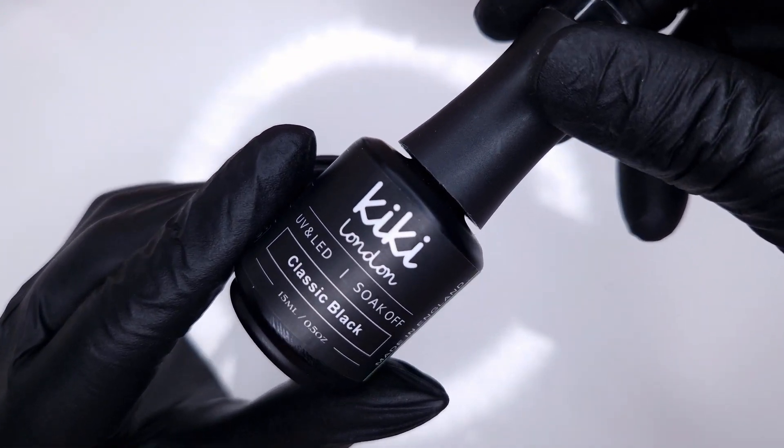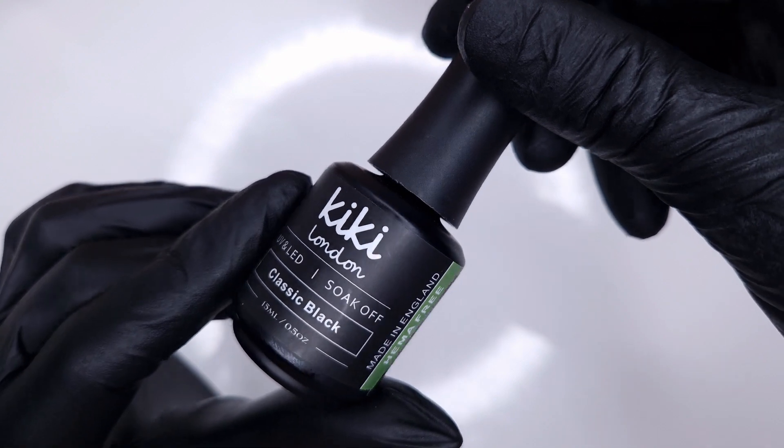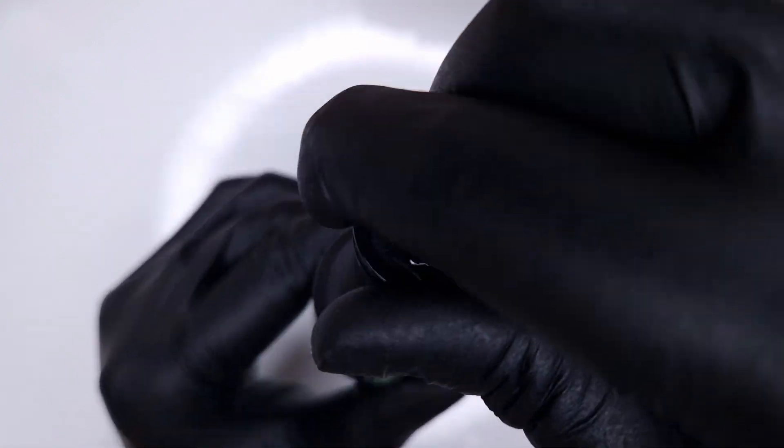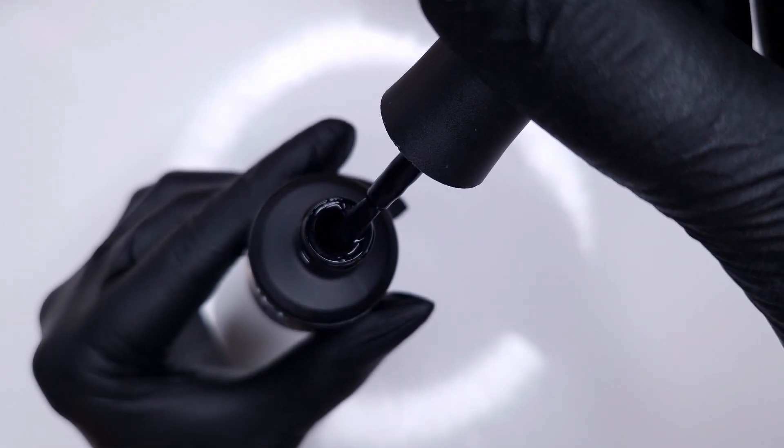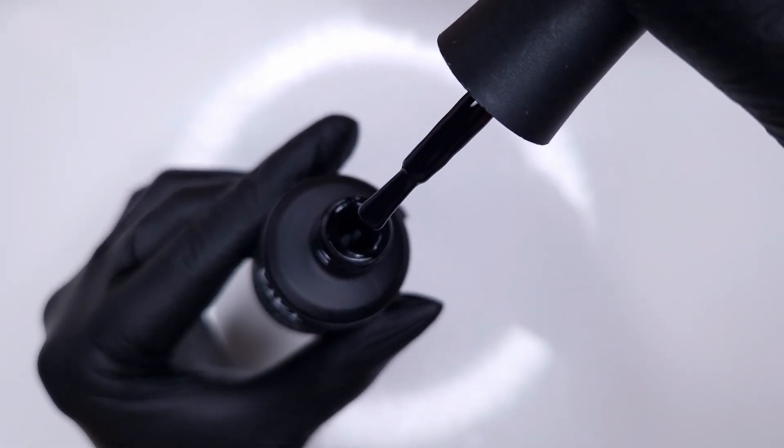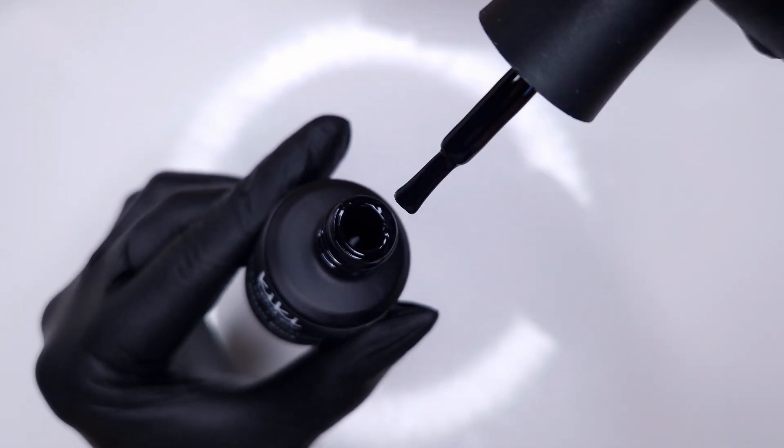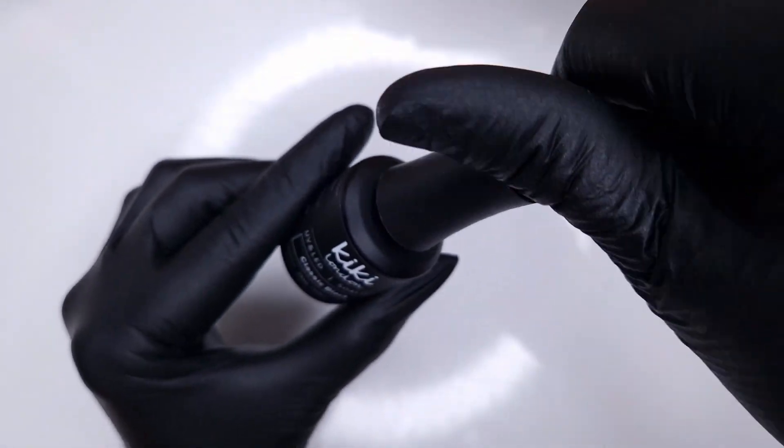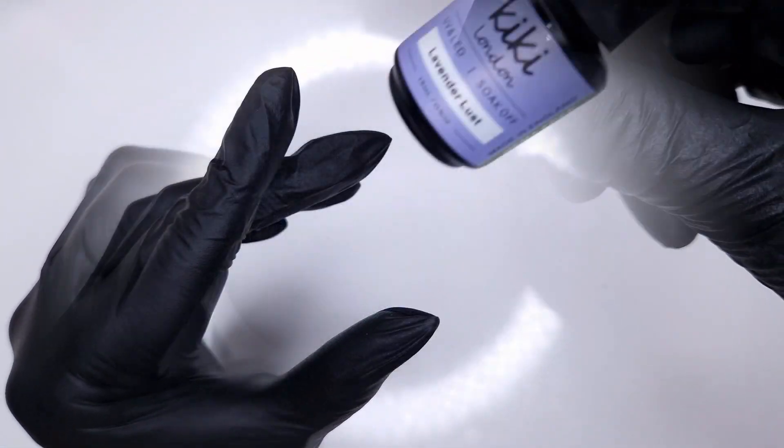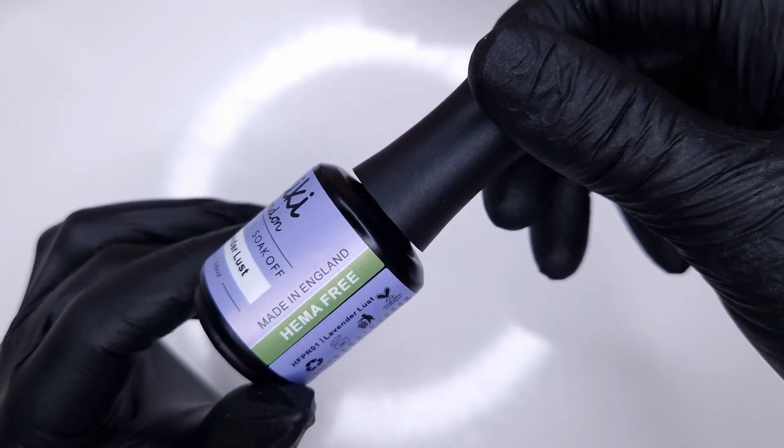Next up we have Classic Black which is going to be your alternative to Black Heart from the regular Kiki London line. This is a super pigmented black. You will only need to apply this in thin coats because it is very very highly pigmented. I find the consistency of the Hema Free range is very similar to the regular Kiki London line so you're not going to have a huge transition if you are swapping over.